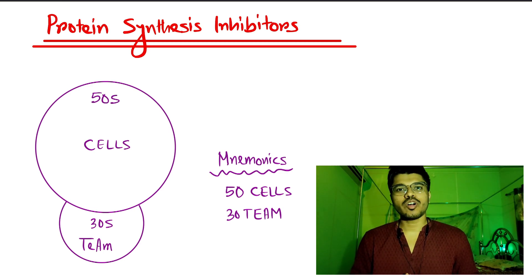Hi guys, today we talk about protein synthesis inhibitors. There are some drugs which act by inhibiting ribosomal protein synthesis. Some drugs act by inhibiting the 50S part of ribosome, some drugs act by inhibiting the 30S part of ribosome. At first, we learn a mnemonic: mnemonic is 50 CELLS, 30 TEAM.